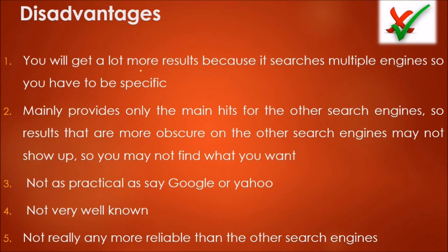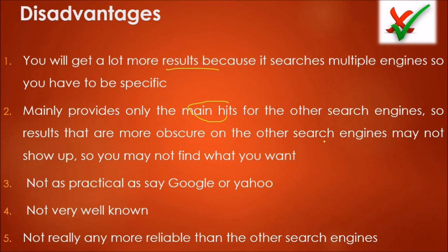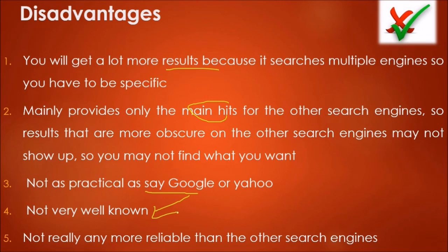However, there are disadvantages. You will get a lot more results because it searches multiple engines, so you have to be specific. It mainly provides only the top hits from other search engines, so results that are more obscure may not show up and you may not find what you want. It is not as practical as, say, Google or Yahoo. Meta search engines are not very well known today, which is why this topic is being discussed. They are also not necessarily more reliable than other individual search engines — this remains a point of discussion and debate.